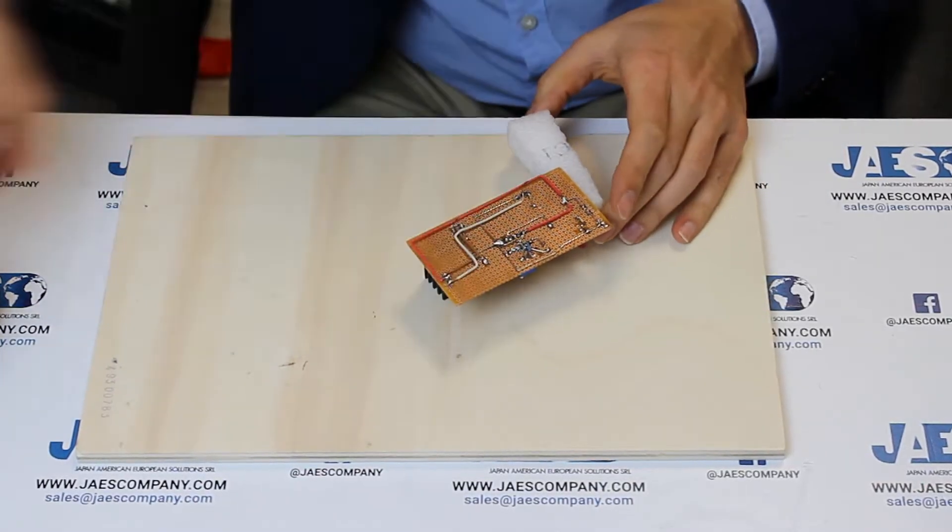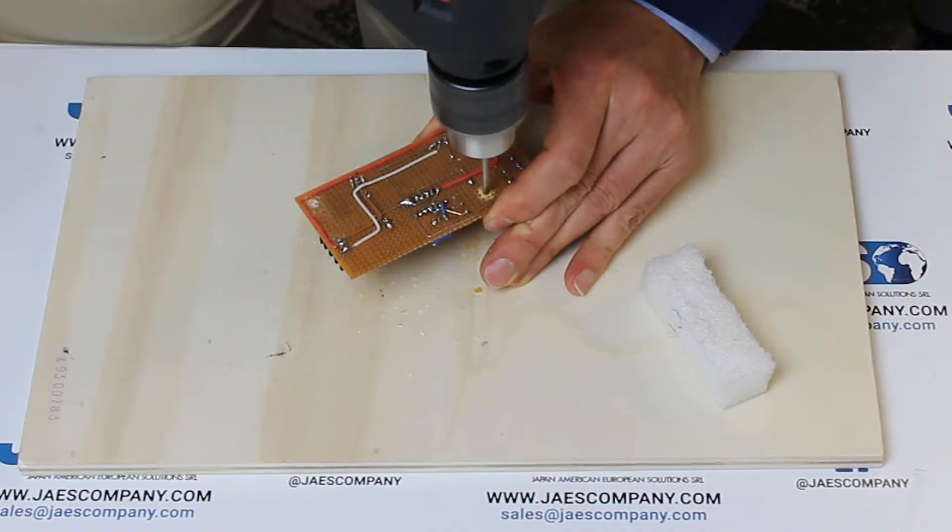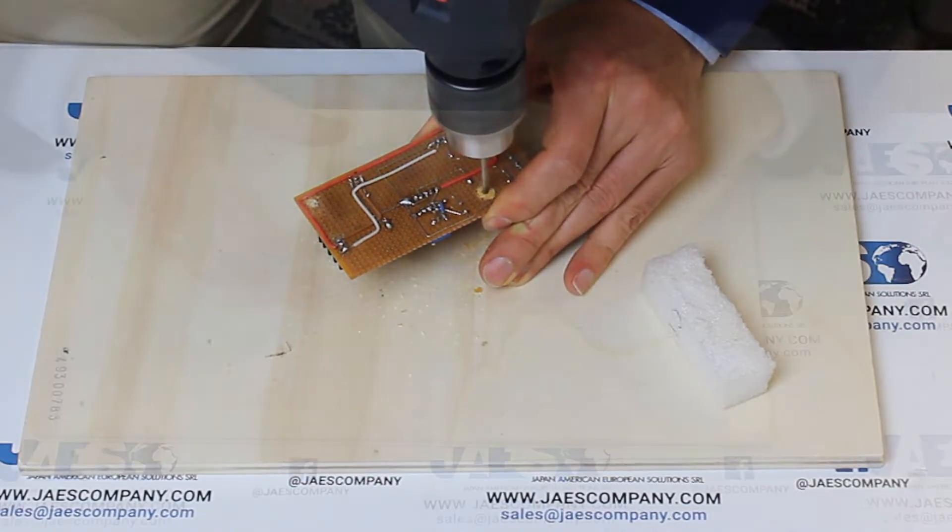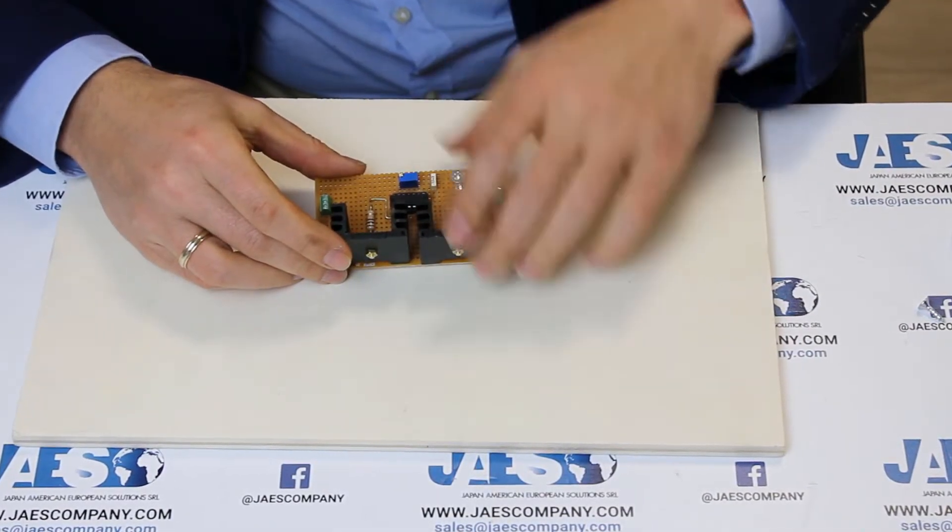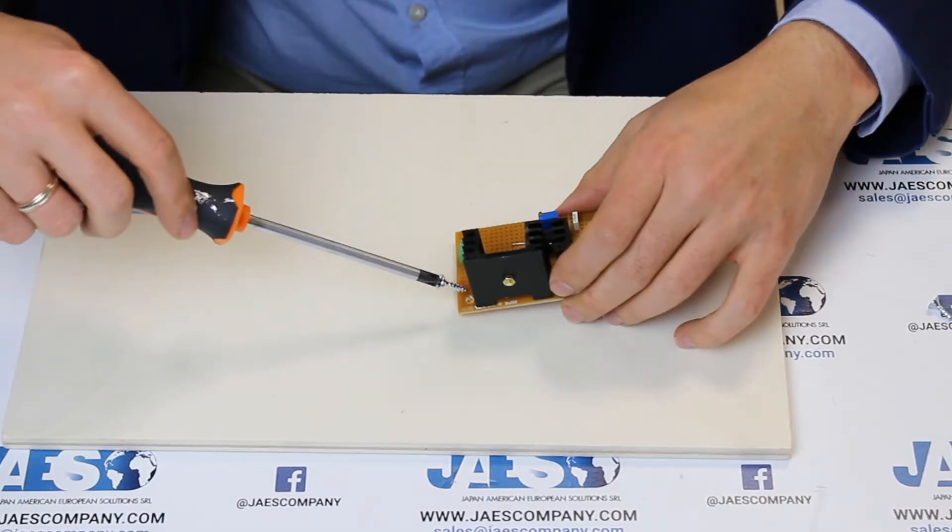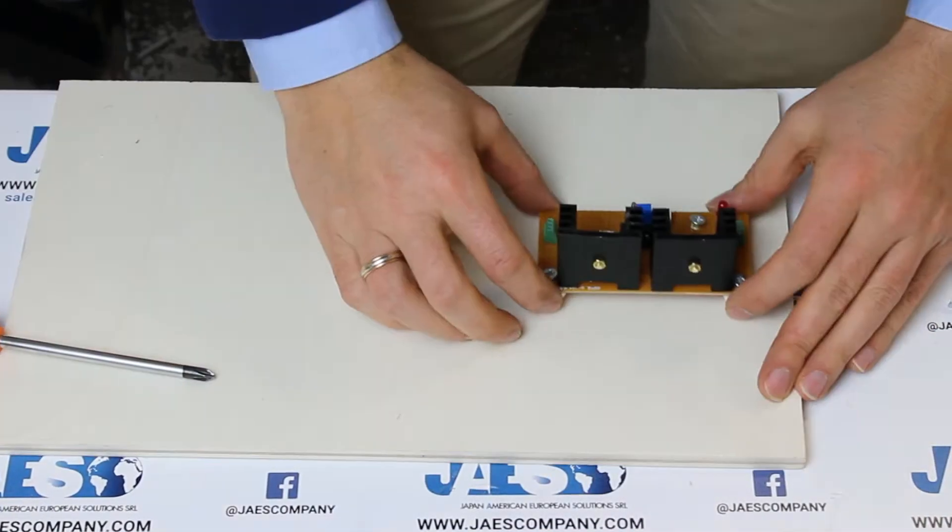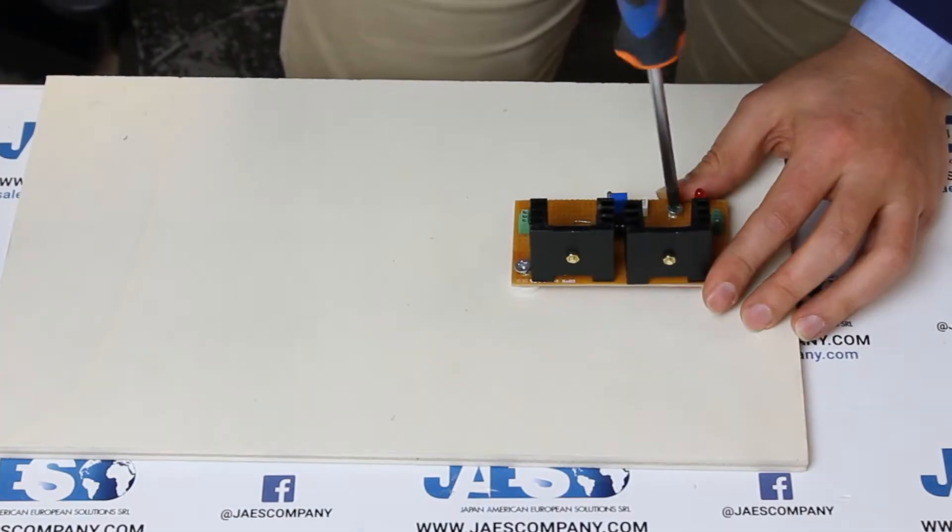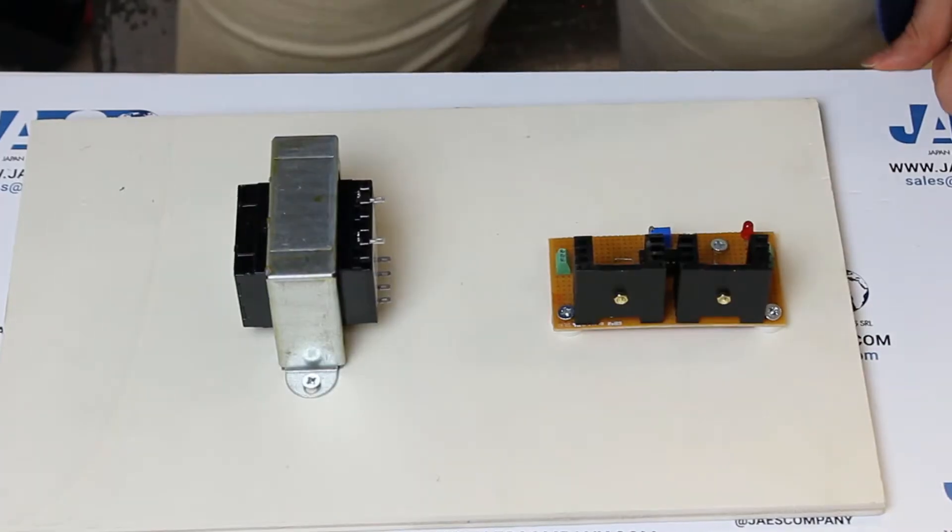After creating every single electrical connection, we can fix our circuit on a wooden base like this one. We then fix the transformer on the wooden base near the circuit.